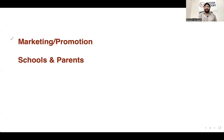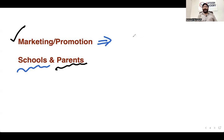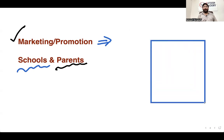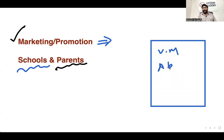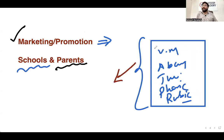There are three things: first, marketing and promotion; second, parents; and third, schools. On marketing and promotion — suppose you are advertising by distributing a pamphlet. If you write only Vedic Maths on the pamphlet, or if you write Abacus, tuitions, phonics, Rubik's cube — the pamphlet still costs one rupee. The cost of the pamphlet is the same whether you list one or five courses.